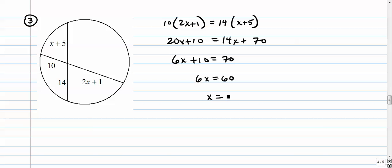We're going to subtract 10 and divide by 6, so X is 10. Plug it back in—when we plug it back in here we get 15, when we plug it back in here we get 21. Check them to make sure that 15 times 14 equals 10 times 21. It turns out that it is.